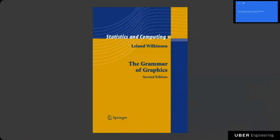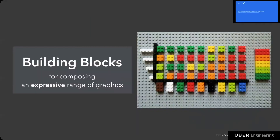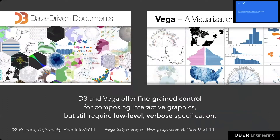Let's go back a little and think about popular visualization tools. To support a broad range of graphics, many popular visualization tools adopt ideas from the grammar of graphics by Leland Wilkinson. The idea is that a grammar of graphics can provide primitive building blocks for composing a broad range of visualizations, just like English grammar informs us how to compose words into sentences. Based on this idea, tools like D3 and Vega offer fine-grained control for composing custom interactive graphics.